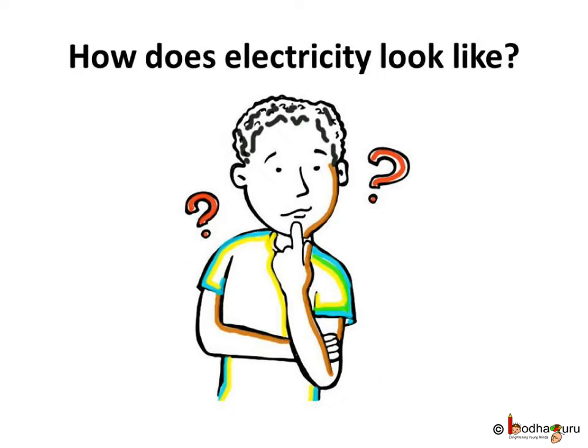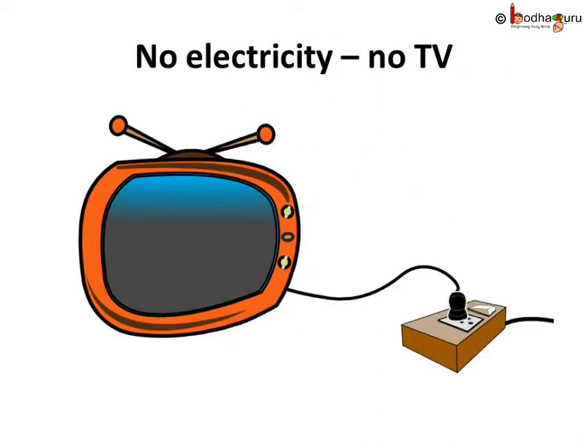Now, we can't see electricity. So, we can't say how it looks like. Then, what is electricity that's driving this world? What does it mean when someone says, 'Oh no, I can't watch TV because there is no electricity?'